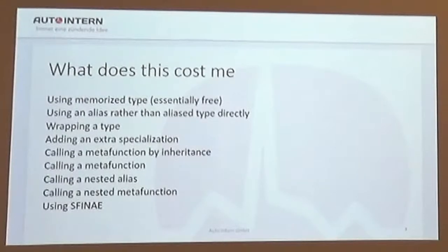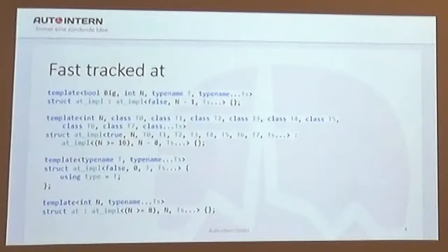It also scales somewhat linearly how many types are in my type list that I'm creating. So one thing we can do, which is already used in practice, is what's called fast track. We can take lots of types off at the same time. If we know that we're still many recursions out, we still have a lot of types, we can throw away a bigger number every time and thus create less intermediate types.